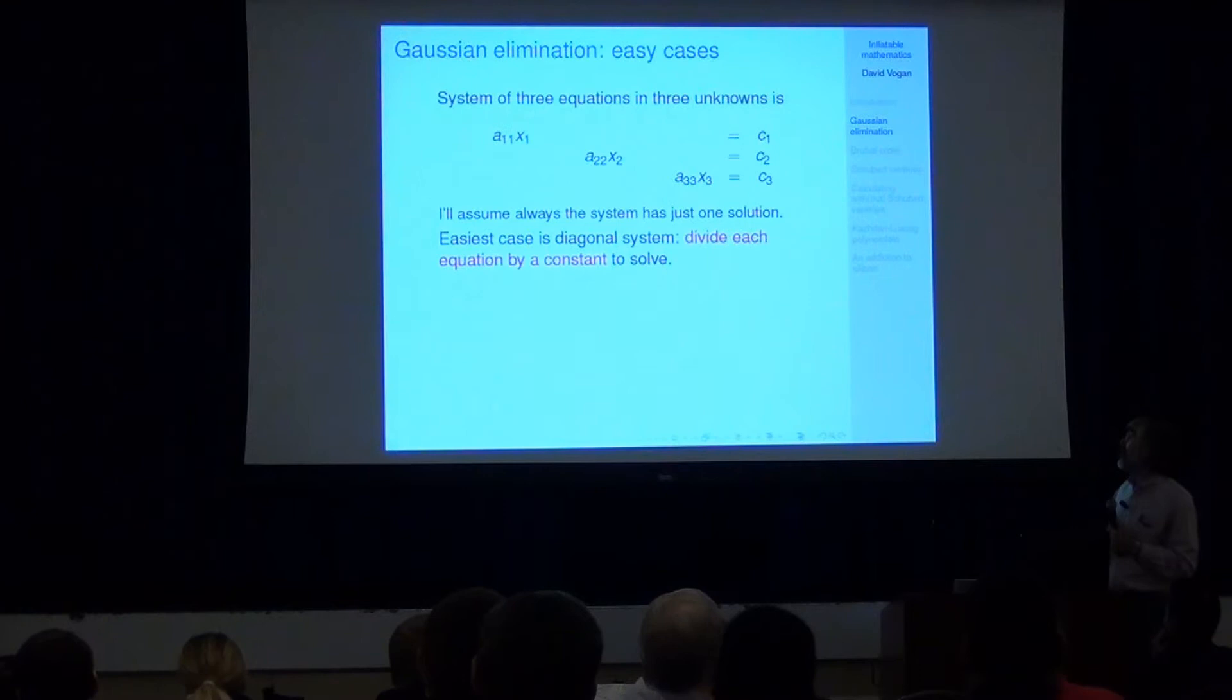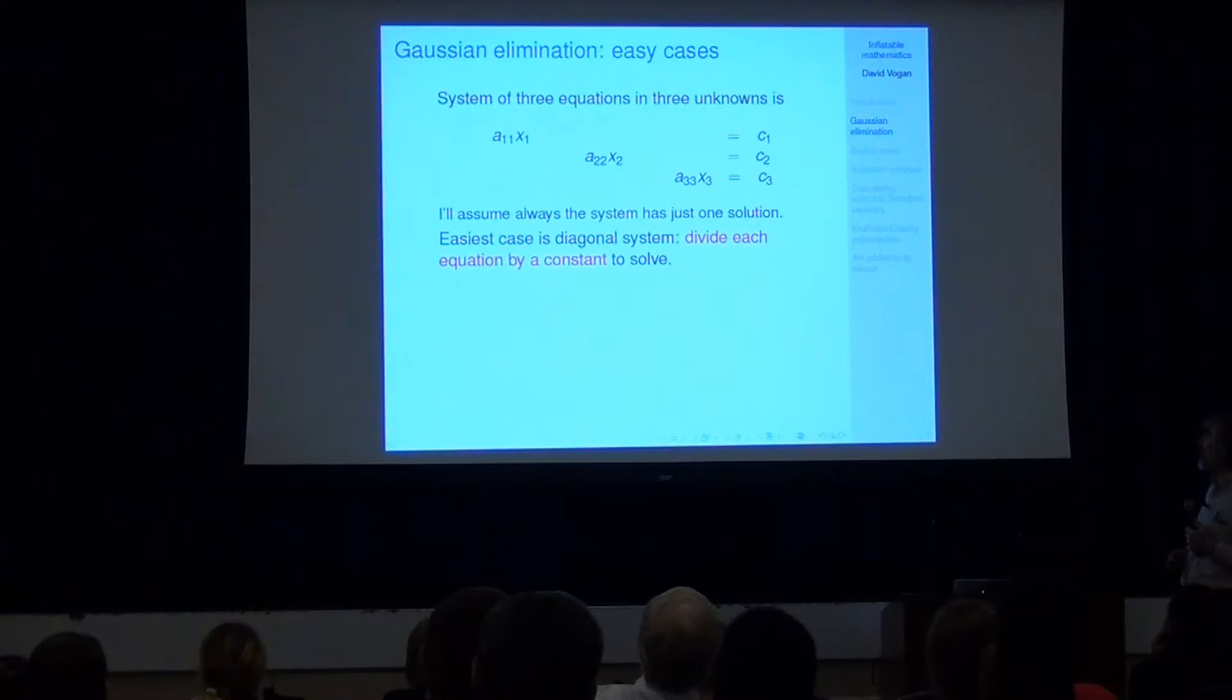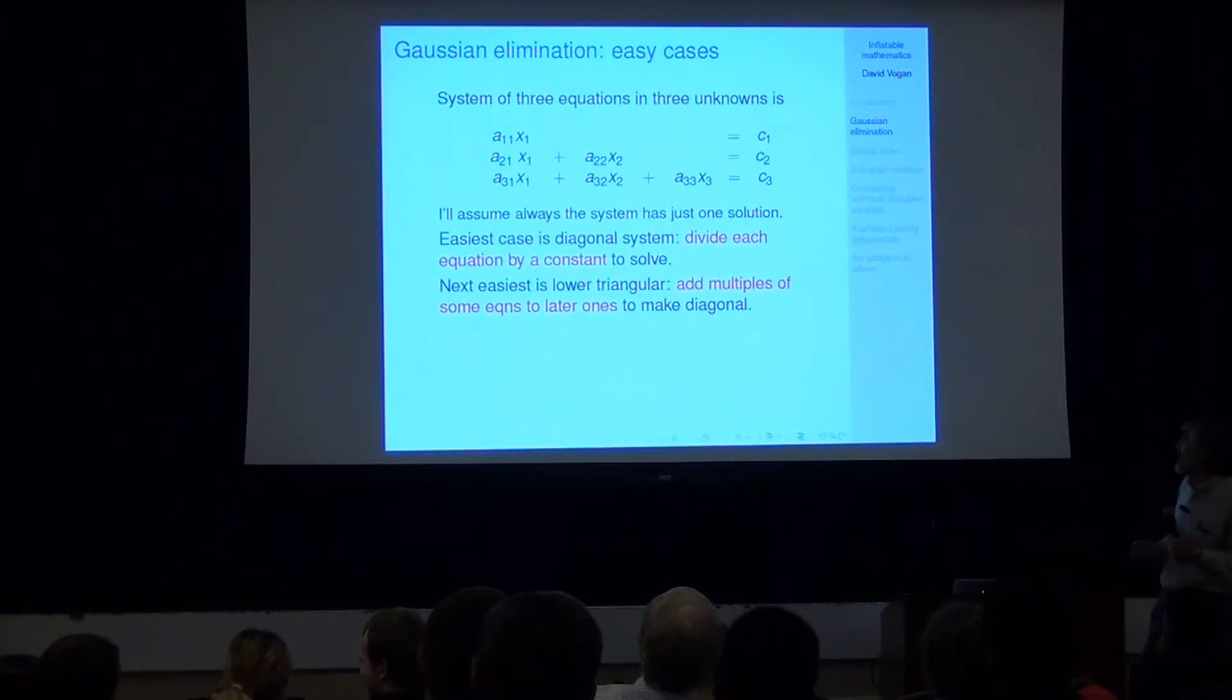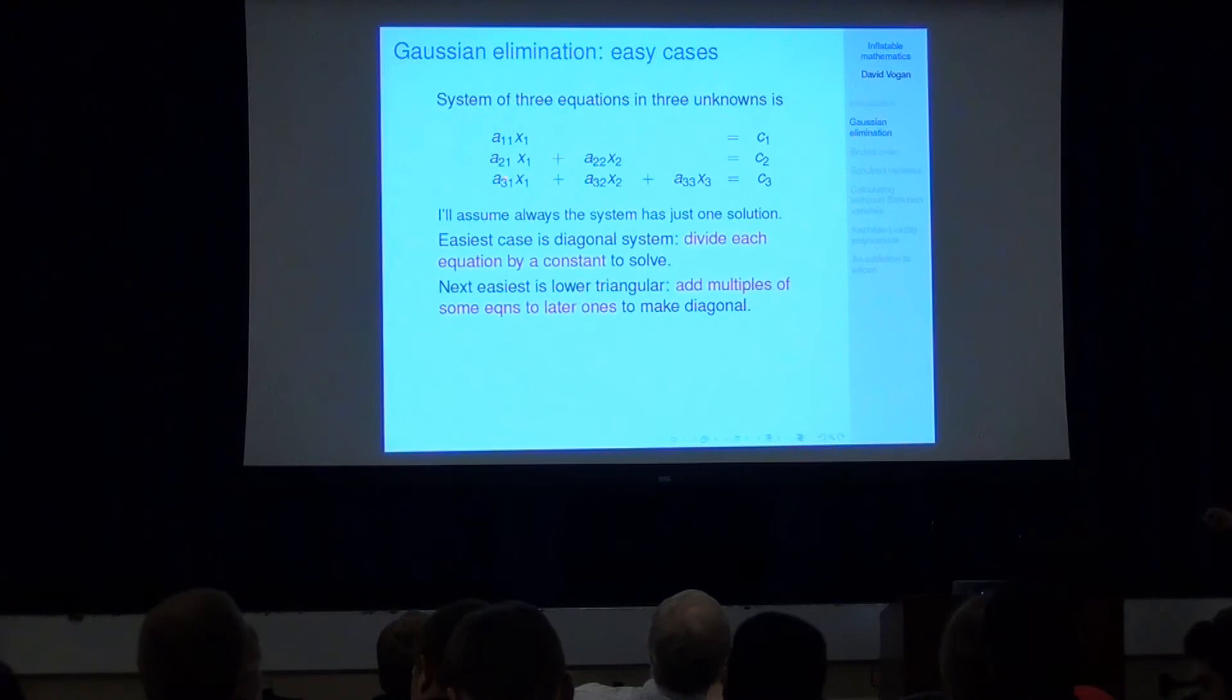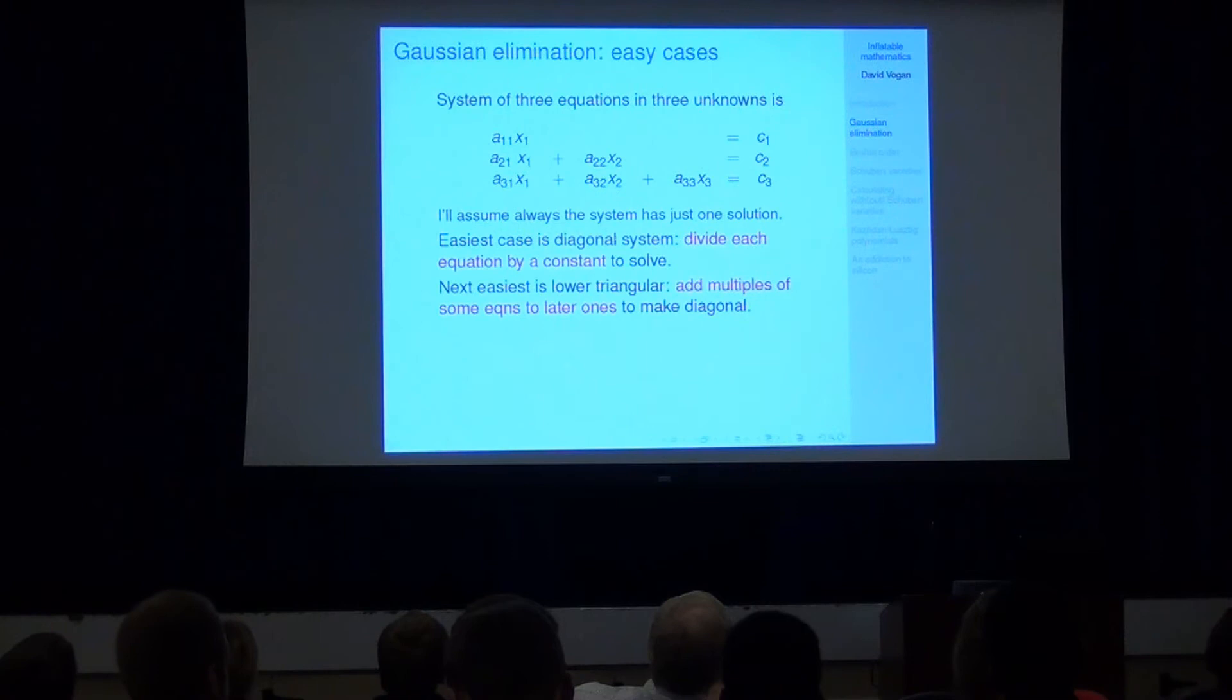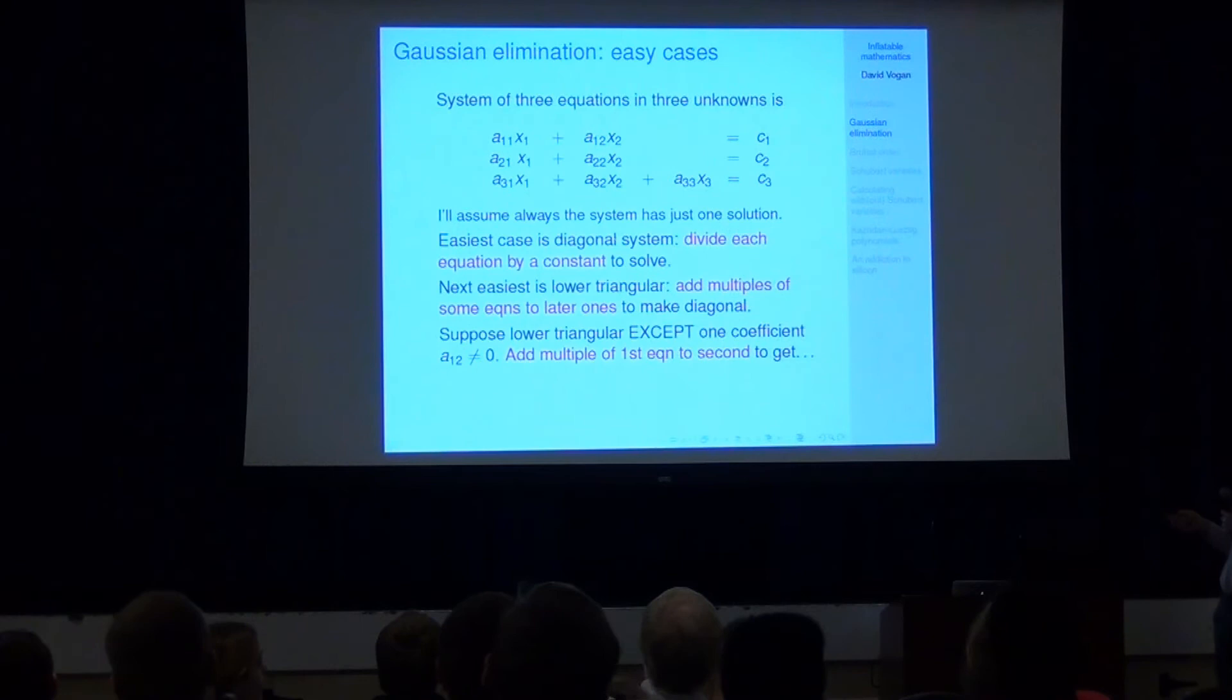So the slightly more complicated case is this lower triangular system, and the way you solve this by Gaussian elimination is you add some multiple of this first equation to the second one to get rid of that x1, and you keep going like that. Always you add some multiple of one of the equations to a later one, and in the end it turns out to be diagonal.